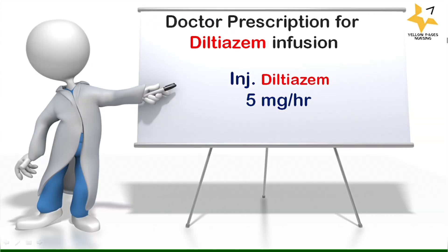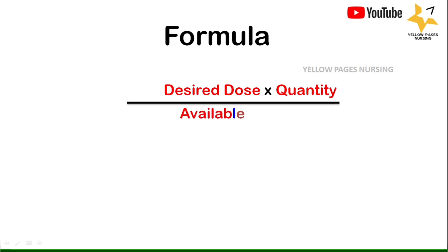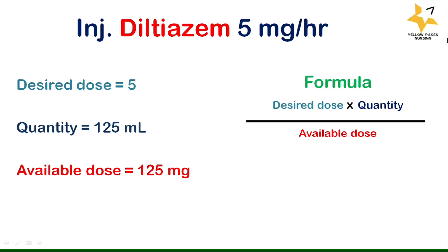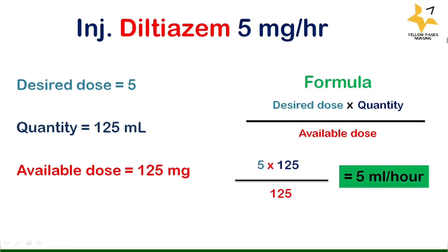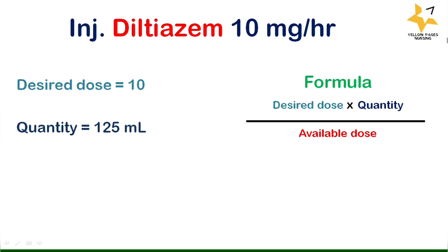Let's get into the examples. Doctor's prescription: injection diltiazem 5 mg per hour. The formula is: desired dose × quantity ÷ available dose = ml per hour. Desired dose is 5, quantity is 125 ml, available dose is 125 mg. Applying the formula, the answer is 5 ml per hour. Second example: injection diltiazem 10 mg per hour. Desired dose is 10, quantity is 125 ml, available dose is 125 mg.